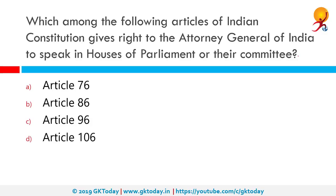Which among the following Articles of the Indian Constitution gives the Attorney General of India the right to speak in the House of Parliament or their committees? Any and all rights or powers that the Attorney General of India has are due to Article 76. Article 76 revolves around the Attorney General of India. He is the government's chief legal advisor and primary lawyer in the Supreme Court of India. He is appointed by the President of India and holds office during the pleasure of the President. He must be qualified to be appointed as a Judge of the Supreme Court.